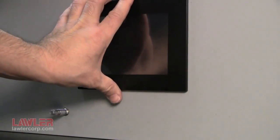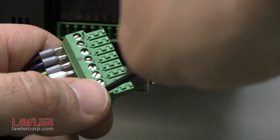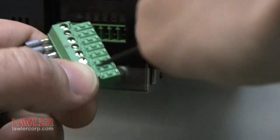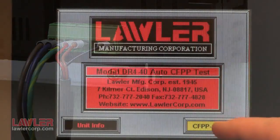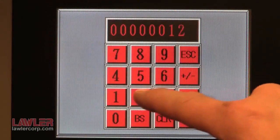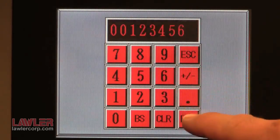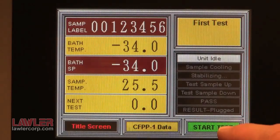Another common element is the control and display. The latest DR4 series has no custom boards that might become difficult to support years from now and no embedded or external computer which are prone to hard drive crashes and operating system problems. Instead, Lawler uses an industrial off-the-shelf logic controller and color touch panel. They are very robust, made by a leading brand and common to many Lawler instruments.